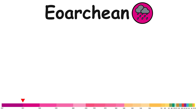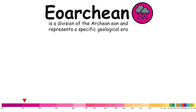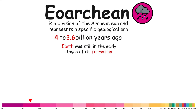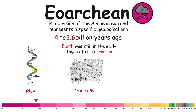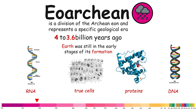Eoarchian. The Eoarchian is a division of the Archean eon, representing a geological era that occurred approximately 4 to 3.6 billion years ago. During the Eoarchian, Earth was still in the early stages of its formation. First, protocells with RNA-based genes appeared, after which true cells evolved along with proteins and DNA-based genes around 3.8 billion years ago.